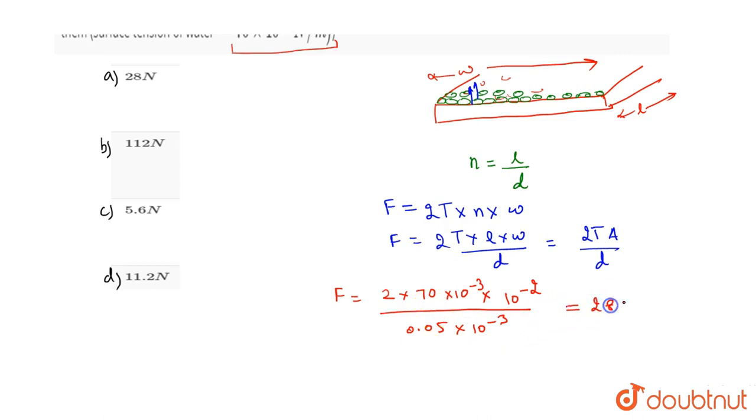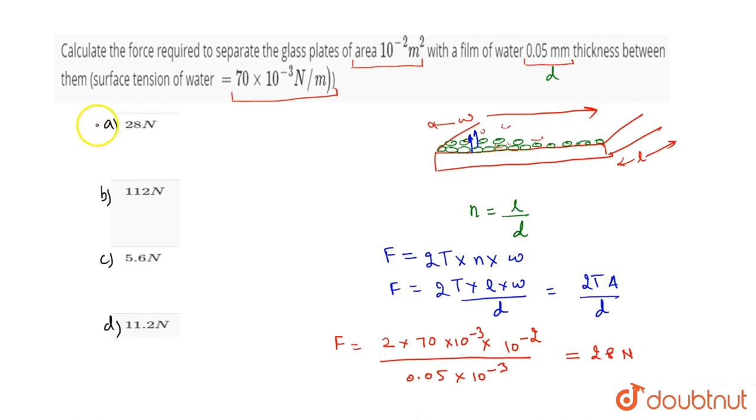We get 28 N. So the answer is option 28 N.